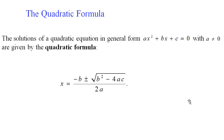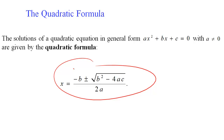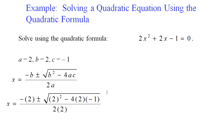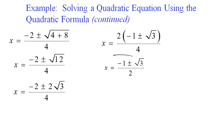Last but not least, the quadratic formula. For the general form ax squared plus bx plus c equals zero — where a cannot be zero — we use x equals negative b plus or minus the square root of (b squared minus 4ac), all over 2a. The plus or minus is where you normally get two answers, though sometimes you get one or none. For example, with a=2, b=2, c=−1, plugging in yields a solution involving radicals. Oftentimes you won't get pretty whole numbers.